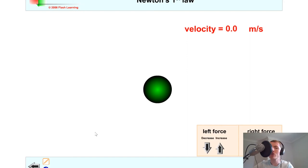Here's a quick simulation just to put Newton's first and second laws into context. So right now we've got an object here and it's not moving, it's got a velocity of 0.0 meters per second, and that is because the forces acting on it are balanced. So it's going to stay where it is because the forces acting on it are balanced.